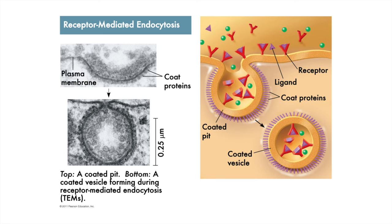Those receptors bind molecules which are generally called ligands. When a critical number of ligands are bound to receptors, that signal received in the cell says let's form a vesicle. Proteins bound to the inside of the membrane called coat proteins start to poke inwards, or invaginate, to form a coated pit and eventually a coated vesicle. Here's an analogy: the receptors are like fish traps set by a fisherman, and the ligands would be the fish he's trying to catch.